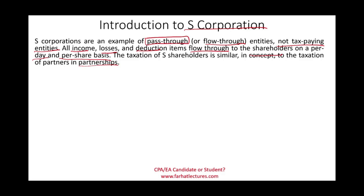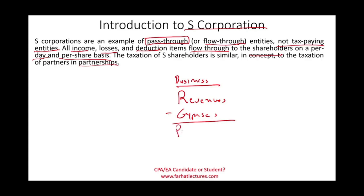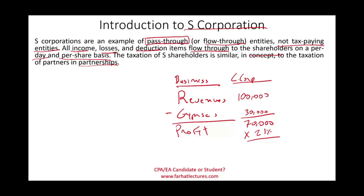Let's illustrate with a simple example. Assume a business generates revenues and incurs operating expenses, resulting in a profit. Say revenues are $100,000, operating expenses are $30,000, and the profit is $70,000. If this is a regular C corporation, it pays 21% tax on that $70,000 profit — so the corporation pays $14,700.